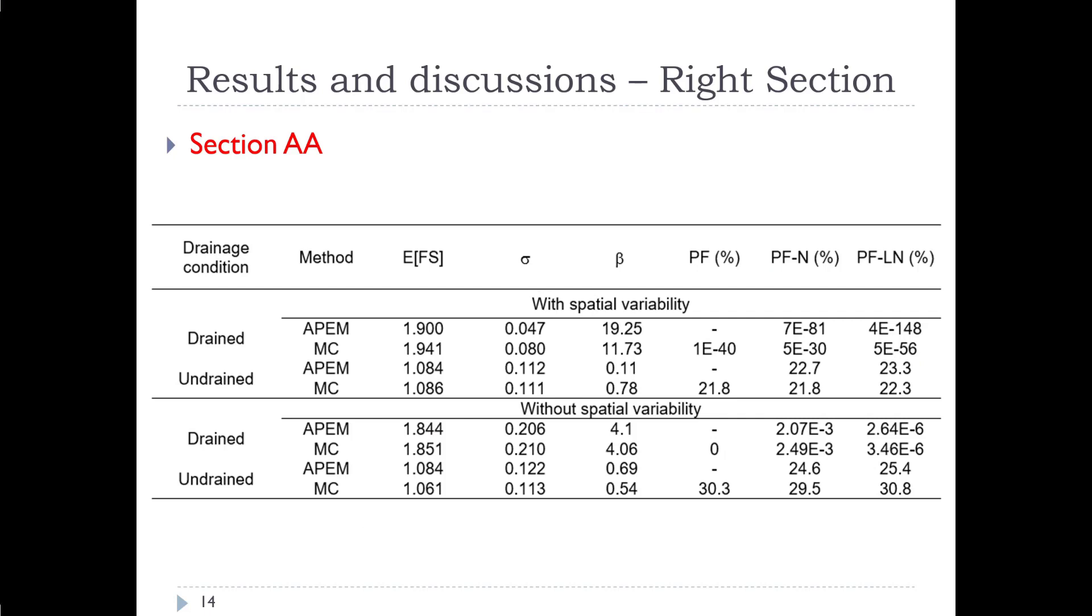If we look at the analysis results, here's a table summarizing everything. We can see again, for the average factors of safety, they are quite high for drained conditions. For undrained conditions, they drop to around very close to failure. And then the resulting probability of failures, when we account for variability, for drained conditions, the probabilities are quite negligible. But for undrained conditions, we have probabilities of failure roughly between 22 and up to 29, 30 percent, given what method we use, whether we use APM or Monte Carlo. But the results are pretty consistent still between APM and Monte Carlo in that range that was mentioned there. So we are starting to see a higher probability of failure that is indicating that there may be a problem.